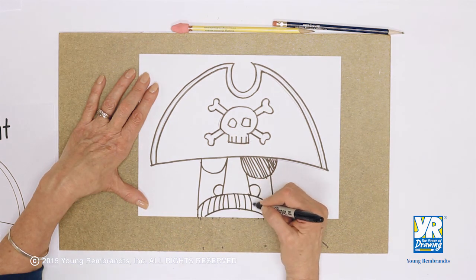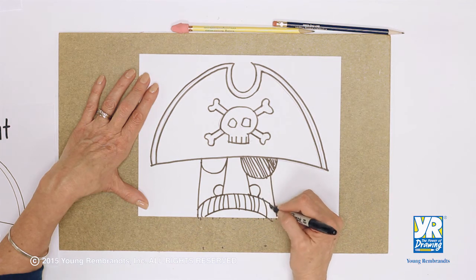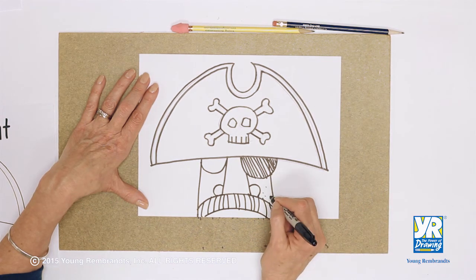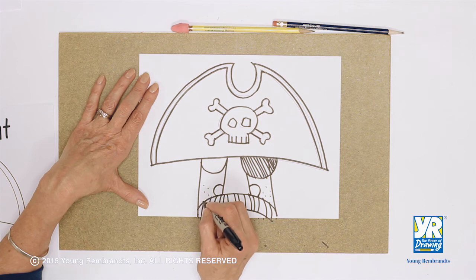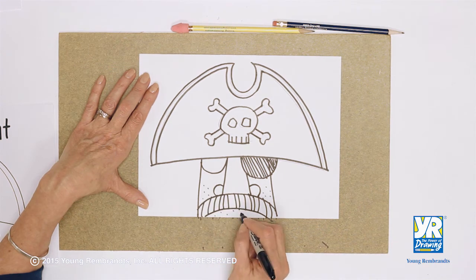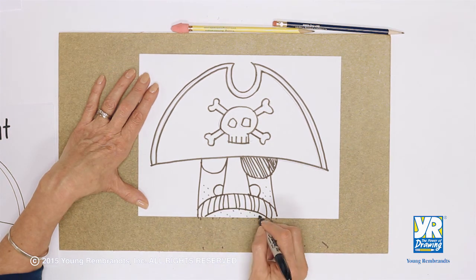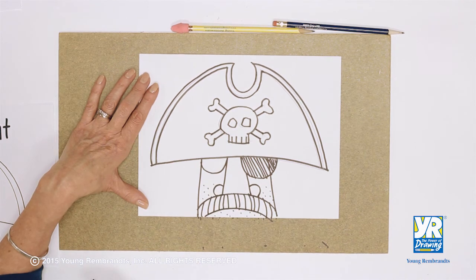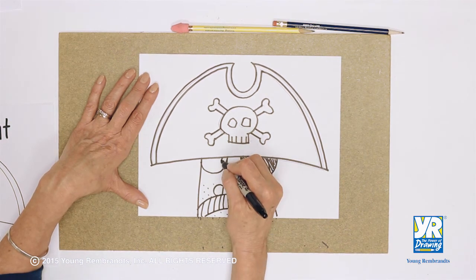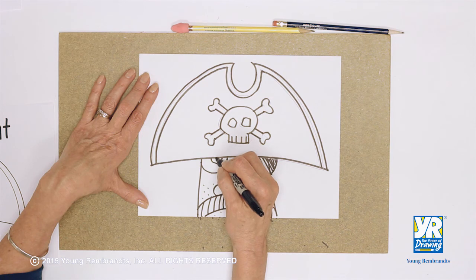And this pirate has not been shaving very well, so he's got a little bit of these little stubble. It's supposed to look like somebody who needs to shave. Pirates aren't real tidy guys. So let's get the top part of his eye. Can't see very much of it. He's kind of lurking under that hat.